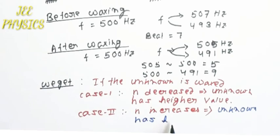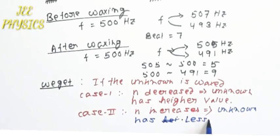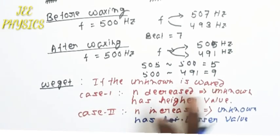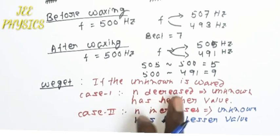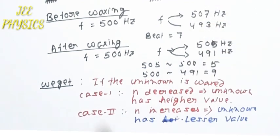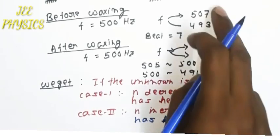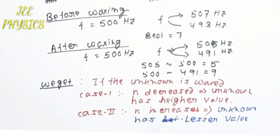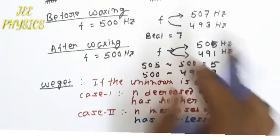Case two: if n increases, meaning the number of beats increased, then the unknown has the lesser value of the two choices. To summarize: when the unknown tuning fork is waxed — if n decreases, the unknown has the higher value of the two choices; if n increases, the unknown has the lesser value of the two choices.